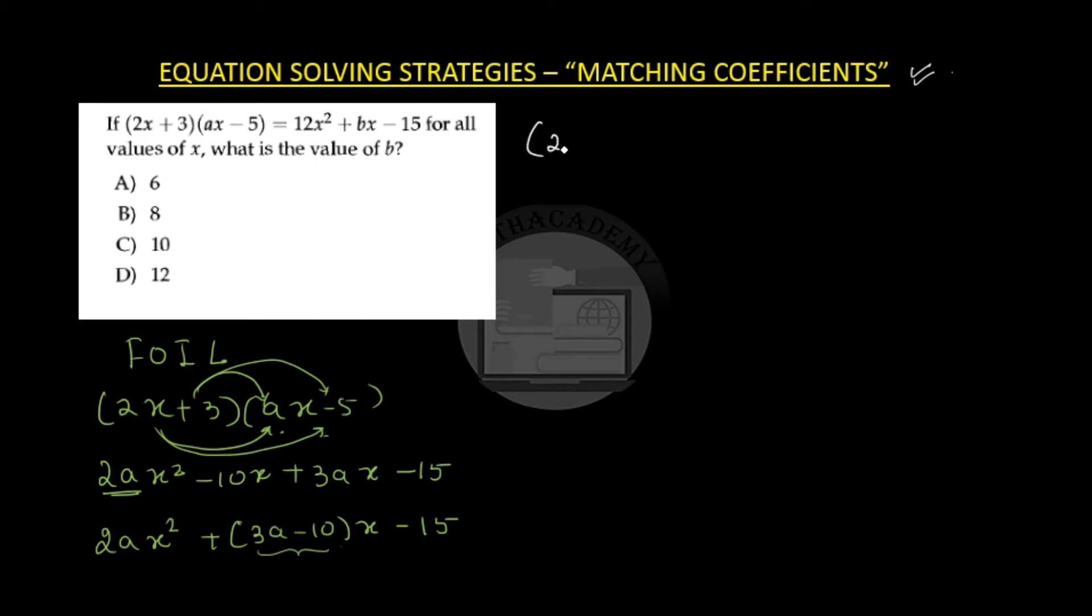Our left hand side is 2x plus 3 into ax minus 5. I have expanded this left hand side by the FOIL approach which I assume all of you know by now, the FOIL approach of expanding the two brackets.